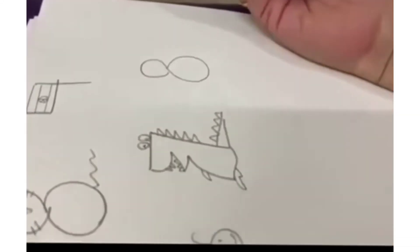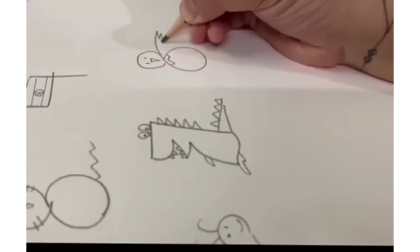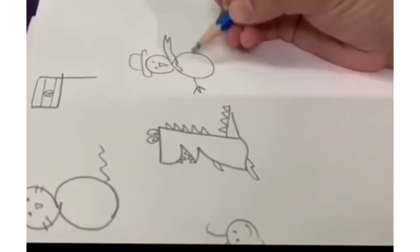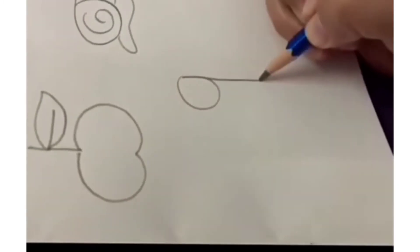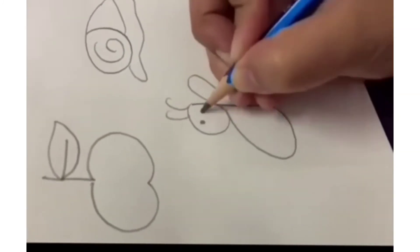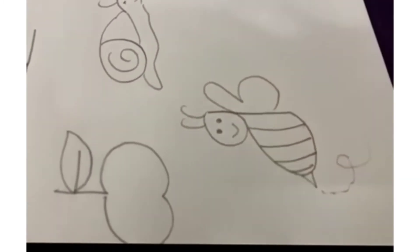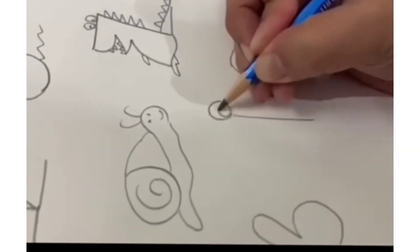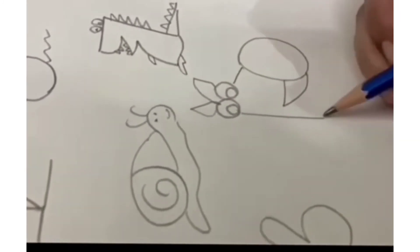8, it's a snowman. 9, it's a honeybee. 10, what is this? It's a pig.